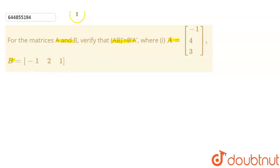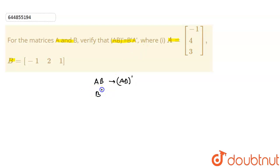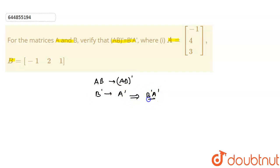So what are the components required? We need AB. If I find AB, then I'll have to find (AB)ᵀ, and I have to find Bᵀ then Aᵀ, and then the product of those two: BᵀAᵀ.